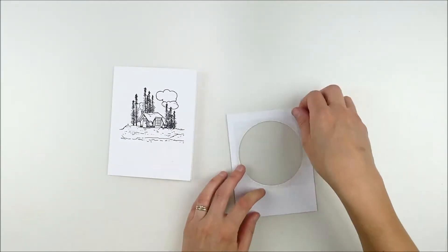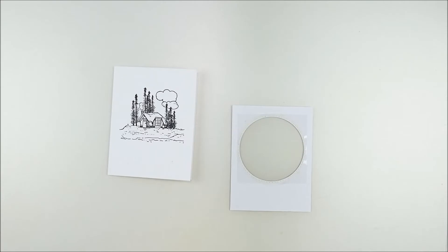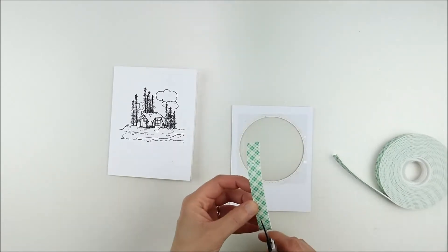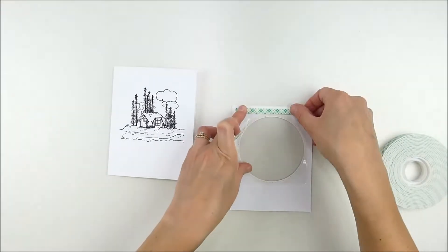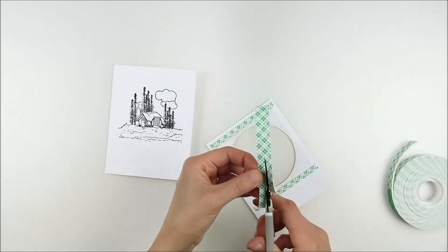So I used some thin, sturdy adhesive to run around the edges and you notice I kind of bent it to fit around that circle so I knew I had a nice tight seal around there to hold that acetate in place.